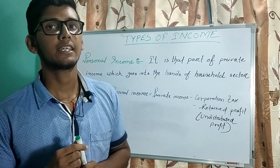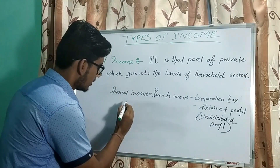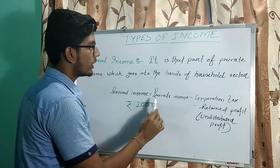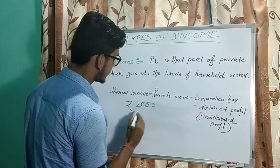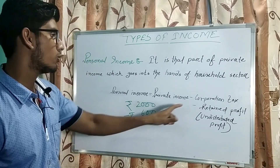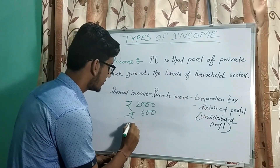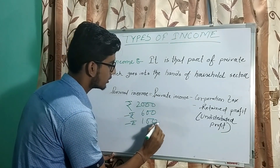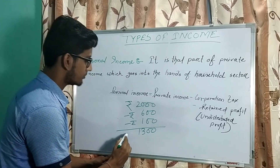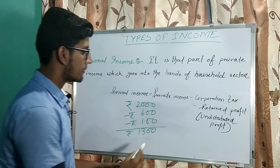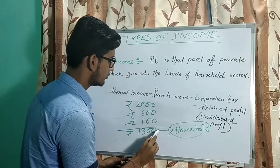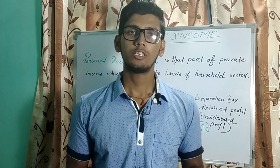For better understanding, let us take an example. A company earns a profit of Rs. 2000. We will deduct corporation tax — let us say corporation tax is Rs. 600. The company also retains Rs. 100 for development purposes. After deducting these, we have Rs. 1300 remaining in the hands of the company. This amount will be distributed among the household sector, and this amount is termed as personal income.